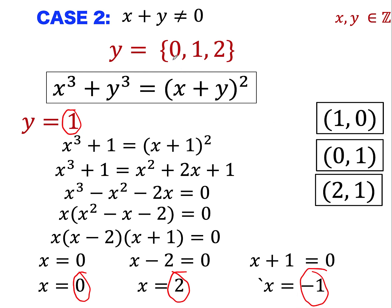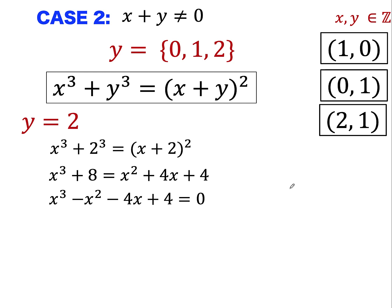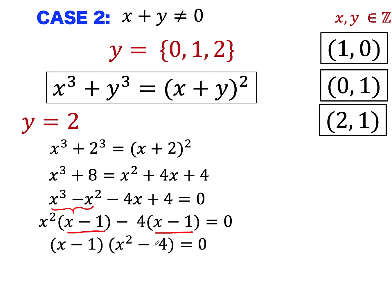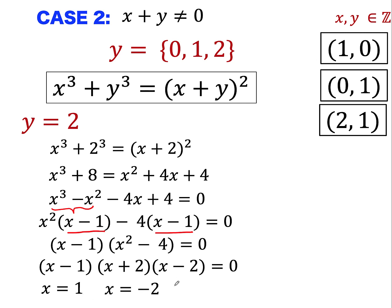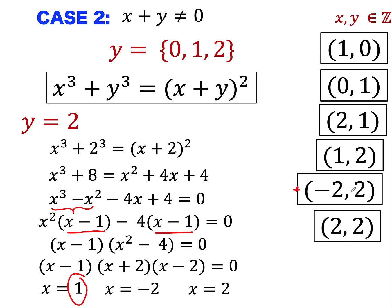When y equals 2: x cubed plus 2 cubed equals the quantity x plus 2 squared. Expanding the right side and writing everything on the left equal to zero, there's a common factor of x squared and negative 4, and the quantity x minus 1 is also a common factor. This leads to a difference of two squares factorable as x plus 2 times x minus 2. So x equals 1, x equals negative 2, and x equals 2. The ordered pair (-2, 2) sums to zero — already covered in case 1 — so we remove it, leaving (1, 2) and (2, 2).